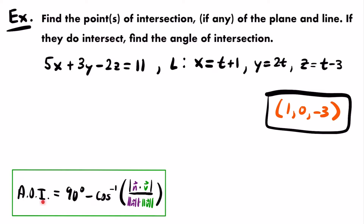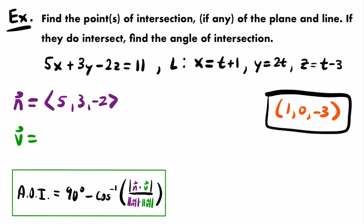The normal vector of the plane has components matching the coefficients of x, y, and z: so n equals (5, 3, negative 2). The direction vector of the line comes from the coefficients of the parameter t in each parametric equation: v equals (1, 2, 1). Now we compute the dot product: 5 times 1 plus 3 times 2 plus negative 2 times 1 equals 5 plus 6 minus 2 equals 9. The absolute value of 9 is 9.